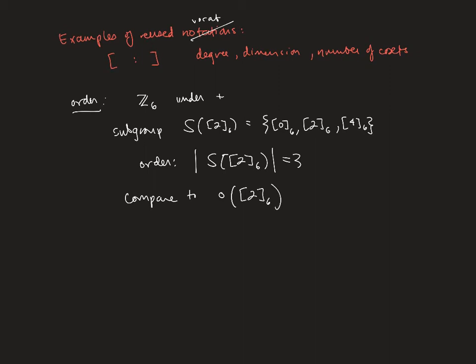Now, if I want to think about what this means under addition, I'm asking how many times do I add 2 to itself, addition being the operation, so that's why I'm adding here, how many times do I add 2 mod 6 to itself to get 0 mod 6. And I want the least possible number.